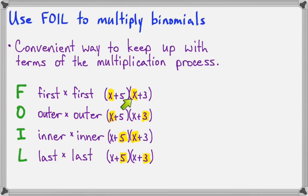So first times first, outer times outer, inner times inner, and last times last. It gives us four terms. And sometimes the middle terms can be combined and sometimes they cannot. But this gives the same results as the distributive property that we talked about in the last lesson. And it's just a kind of a convenient way to refer to the different parts of the problem.